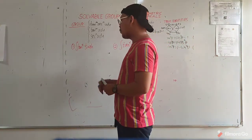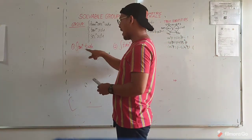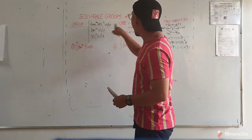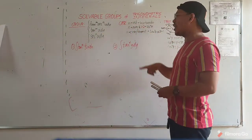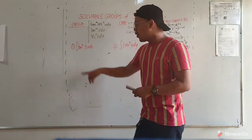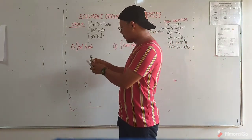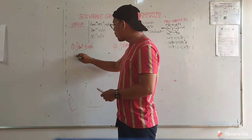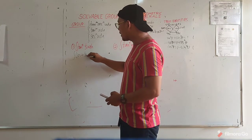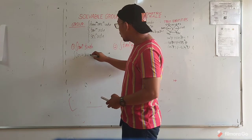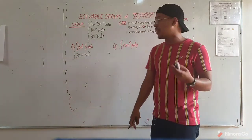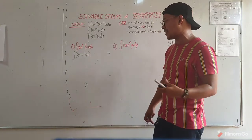Let us solve the integral of tan to the fourth, one-third x, dx. Tan raised to n — m is odd. Therefore, factor out secant u, tangent u, du. We will think of the quantity where, when we multiply secant u, tan to the fourth one-third x, dx.